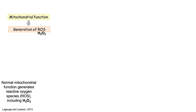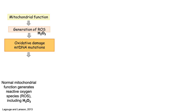Normal mitochondrial function generates reactive oxygen species, ROS, including hydrogen peroxide, H2O2. These reactive oxygen species then oxidatively damage protein, lipids, and nucleic acids, including DNA, and can induce mitochondrial DNA mutations. The net effect of this damage and increased mutation load is mitochondrial dysfunction.